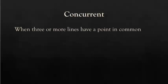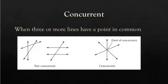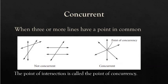First, we need to define what is concurrent. Concurrent is when we have three or more lines that have a point in common. On the left side, we see three lines and they intersect each other, but not all three at the same time, so they are not concurrent. On the right side, we have three lines that all intersect at one point, and that is the point of concurrency. The point of intersection is called the point of concurrency.